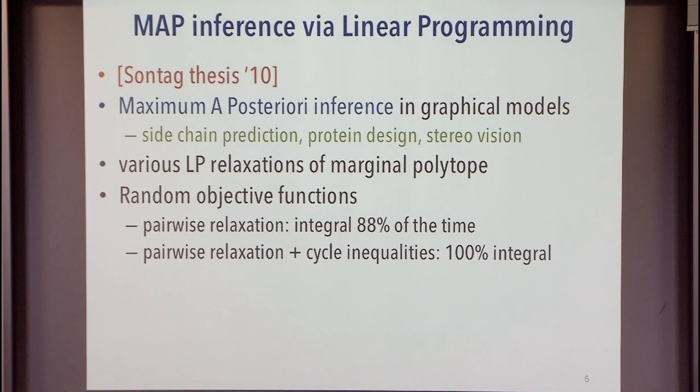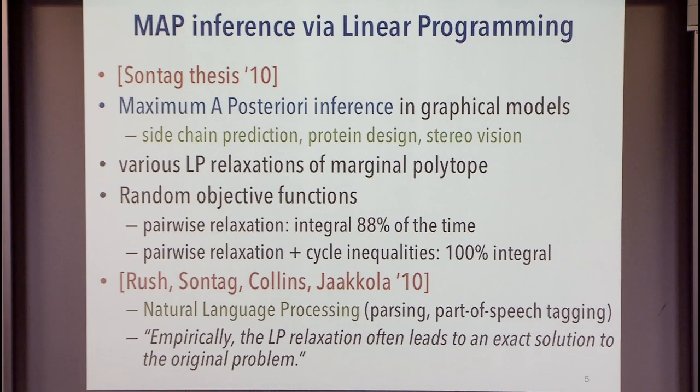He looked at a pairwise relaxation, which was integral 88% of the time for a particular experiment. When he adds additional inequalities and strengthens the relaxation, he gets integer solutions 100% of the time. There's similar follow-up work in natural language processing, trying to do parsing and part-of-speech tagging, where empirically they observe that the LP relaxation often leads to an exact solution. This is intriguing and something we'd like to explain.